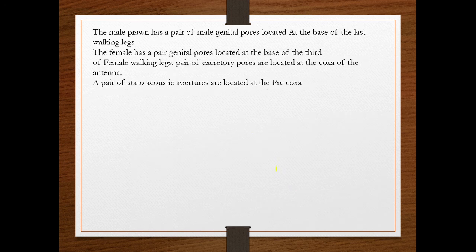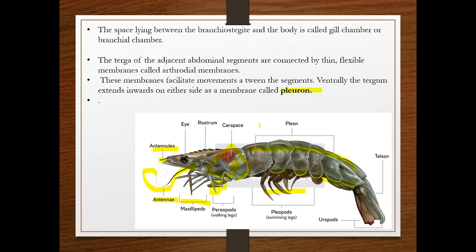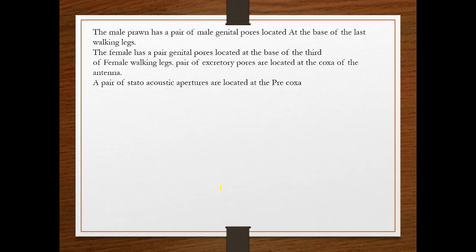The male prawn has a pair of male genital pores located at the base of the last walking legs. The female also has a pair of genital pores located at the base of the third walking leg. A pair of excretory pores is located at the coxa of the antennae.